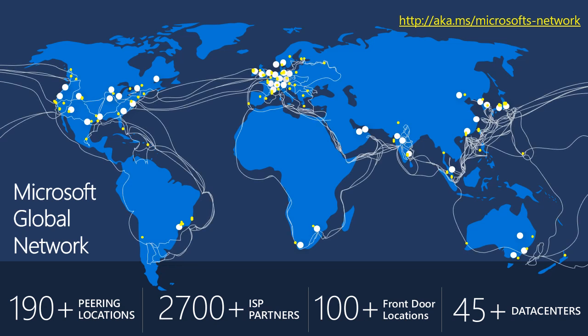Here's a conceptual illustration of the scale of our network. It's really a global network — we have peerings in more than 190 locations with more than 2,700 ISPs. Not only do we have 45 or more data centers, we also have more than 100 Azure Front Door locations. If you want to learn more about this network, the link is aka.ms/microsoft-network. One funny fact I'd like to share to illustrate the scale: quite a while ago we realized that connectivity capacity between Europe and North America via subsea cables was not meeting our projected growth needs.